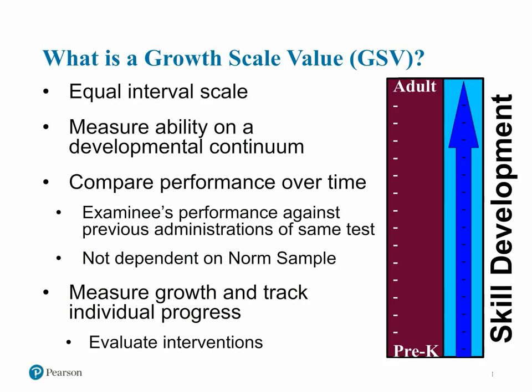Now, growth scale values, or GSVs, link test items to a common scale with equal interval units of measurement. This linkage allows the addition and subtraction of growth scale values to document progress over time. GSVs measure ability on a developmental continuum, ranging from pre-K through adulthood. This continuum relates to ability or skill level, and is not in comparison to a norm group.